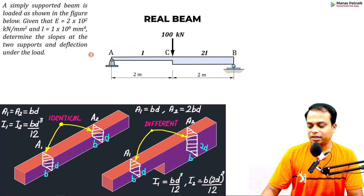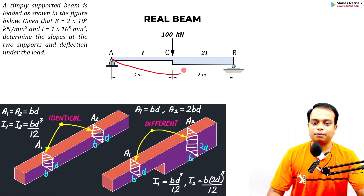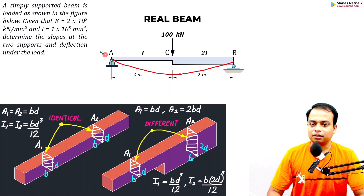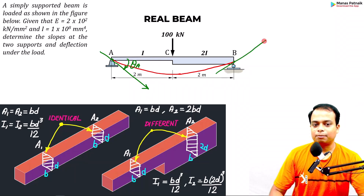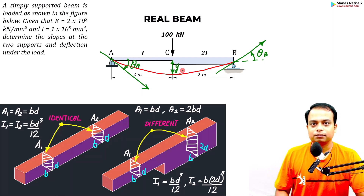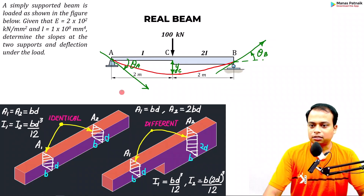It is really no big deal — we can do this very easily. Assuming that the beam would bend in this fashion — this is highly exaggerated by the way — this is the slope at A, the angle theta_A, which is the tangent to the elastic curve at point A. The tangent at point B gives you the slope theta_B. The vertical downward displacement is the deflection at G.